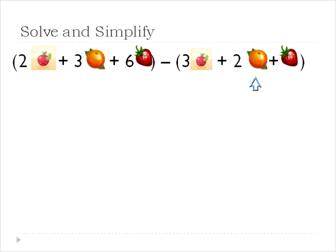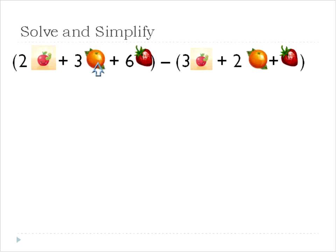Now we'll convert those into variables later, but basically when you have two of something, three of something else, and six of something else — like in this case apples, oranges, and strawberries — in the future we may say two x, three y, six z, and then you're subtracting three x, two y, and one z.